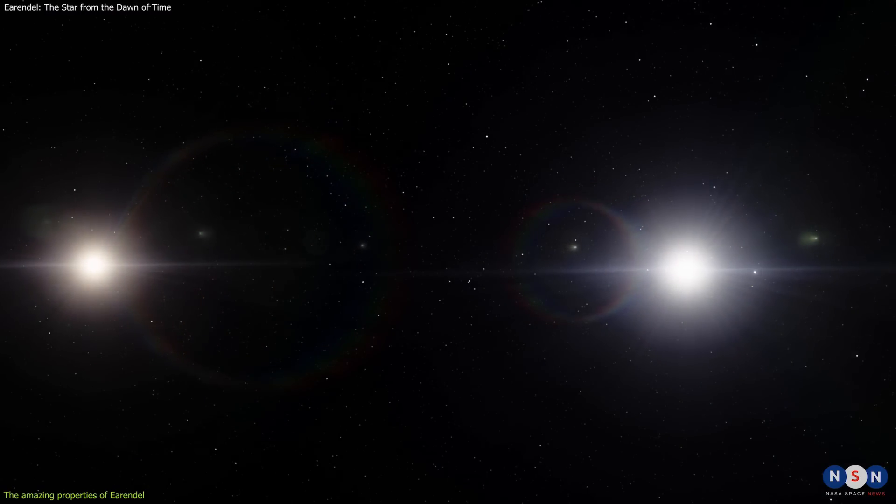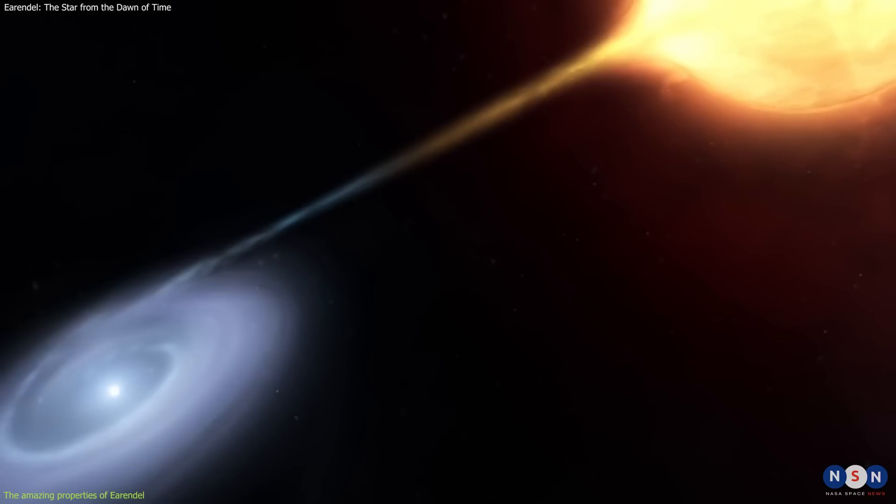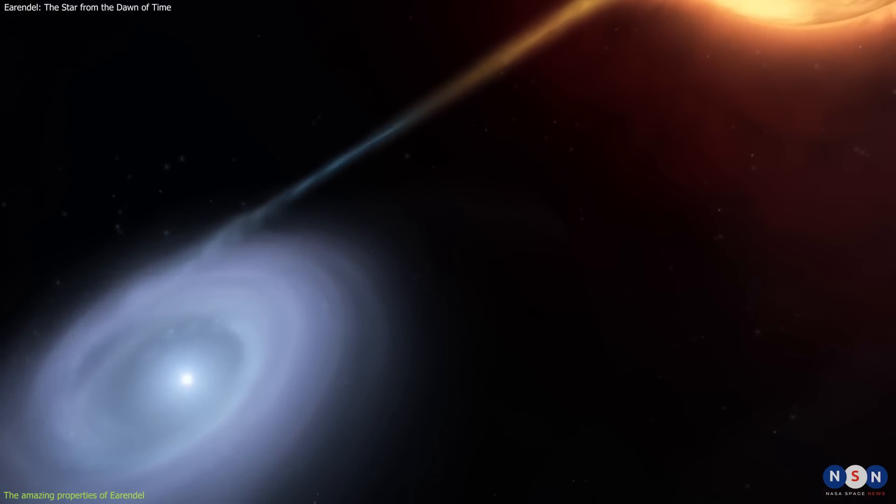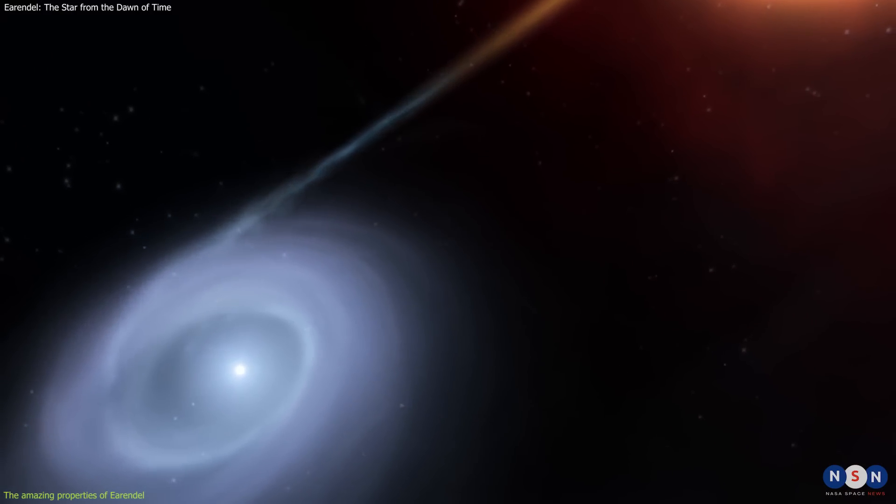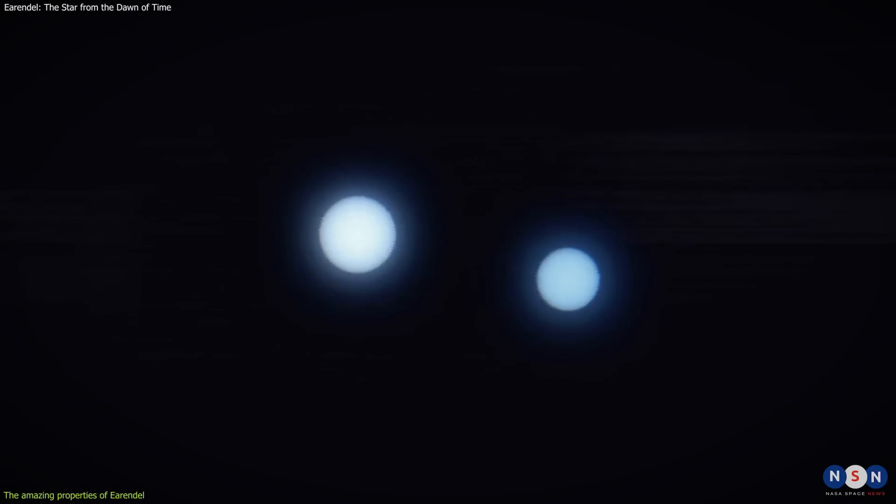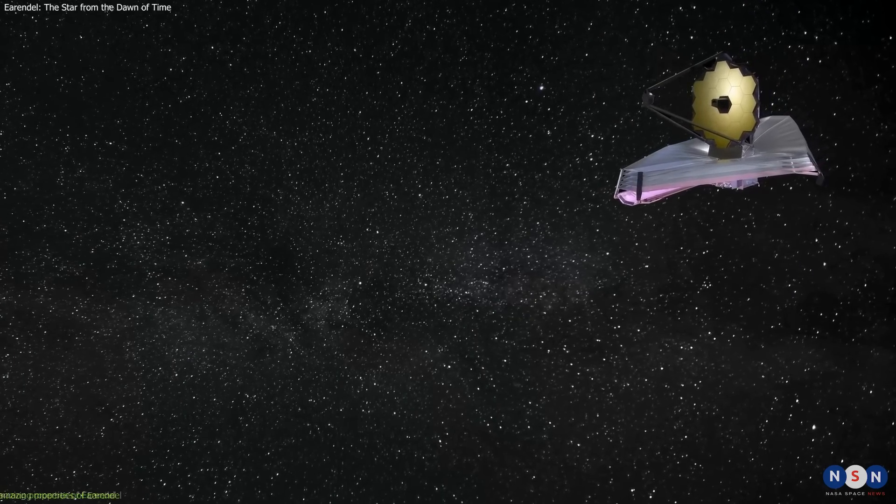Binary stars are very common in the universe, and they can affect each other's evolution and fate. For example, if one star transfers mass to another star, it can change their brightness, temperature, and lifespan. However, to confirm if this star has a companion star and determine its properties, Webb will need to observe it for longer time and with different filters.